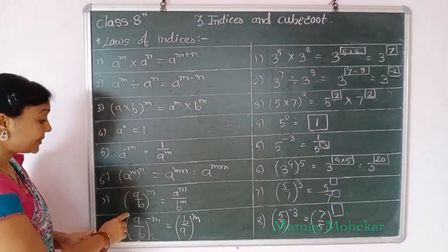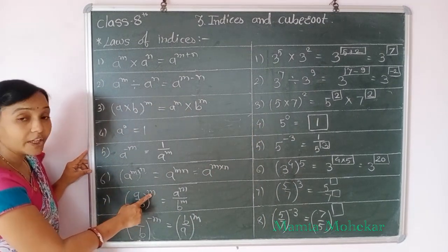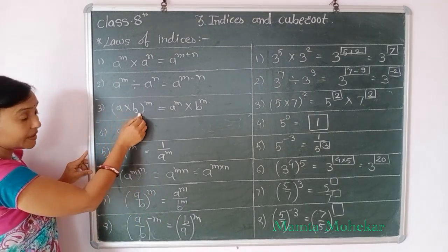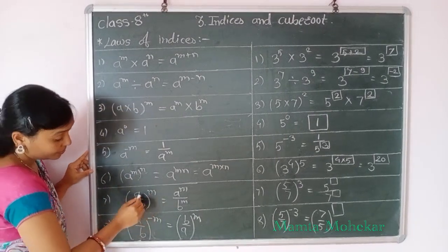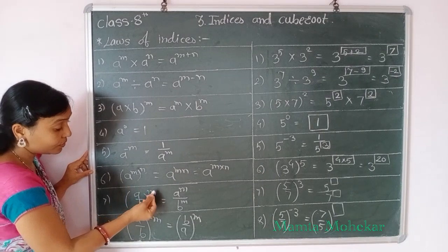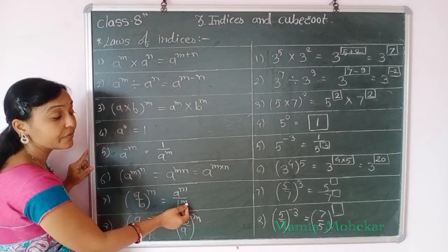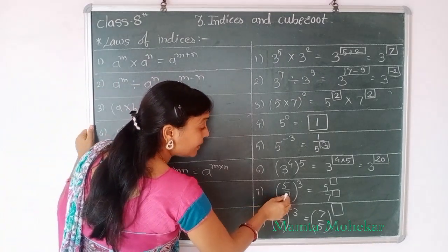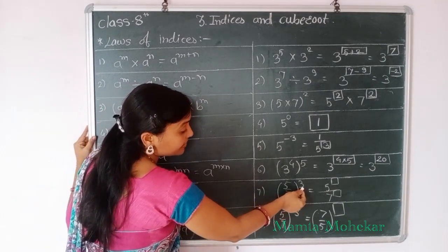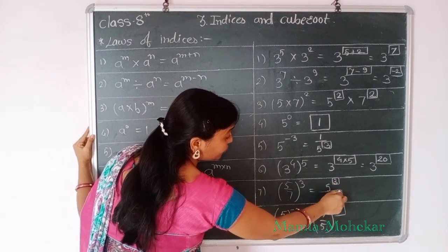Next rule is: A by B, bracket to the power M. Same idea as rule 3 but here we have division. The power M applies to both A and B, so we write A raised to power M upon B raised to power M. Example: 5 by 7 to the power 3. A is 5, B is 7, M is 3. So we write 5 raised to power 3 upon 7 raised to power 3.